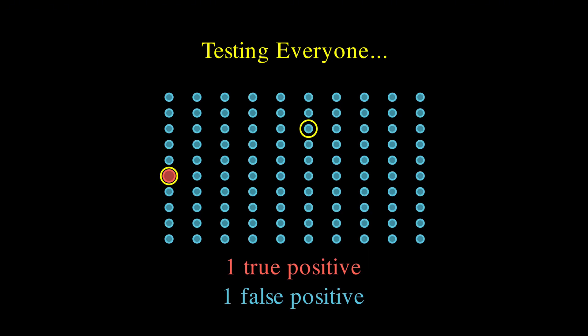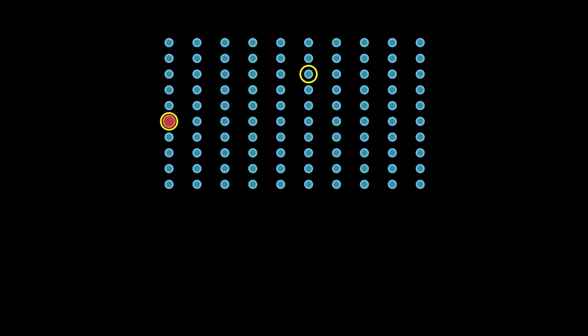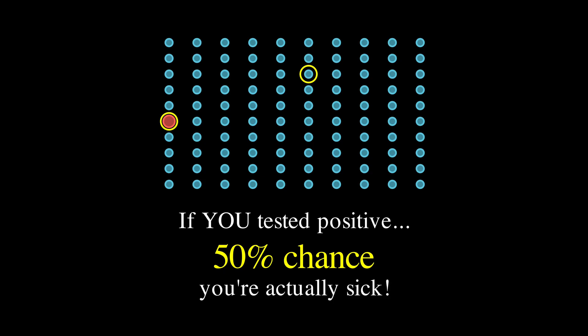That means we have two positive tests total, one true positive and one false positive. And this is the key insight coming up. Thus, if you're one of those two people who tested positive, you have exactly a 50% chance of being the actually sick one. Yes, 50%, not 99%, like our intuition suggested. And this happens because we didn't properly account for how rare the disease is in the first place.